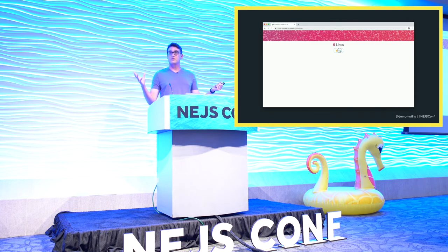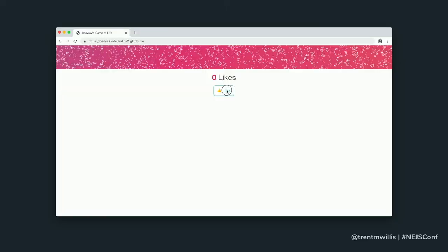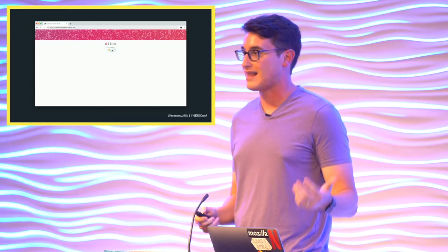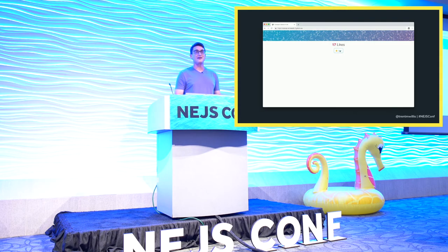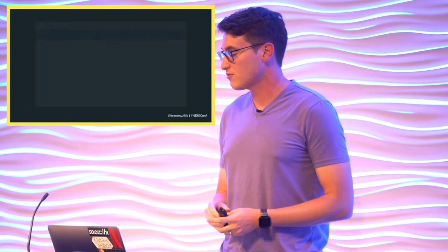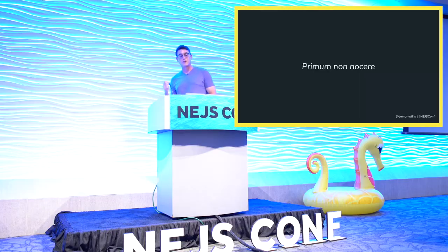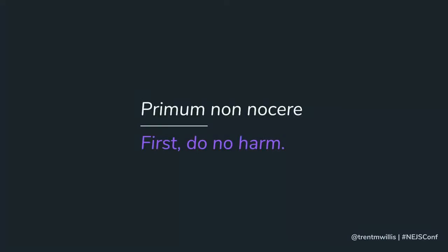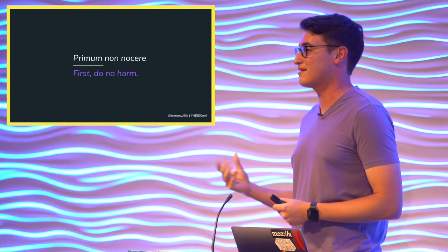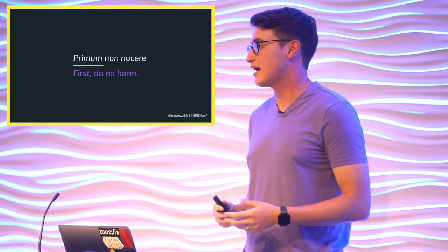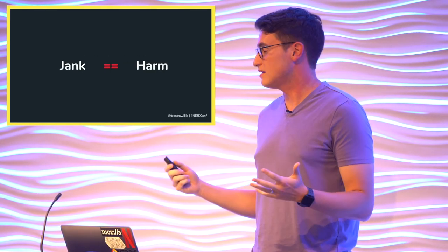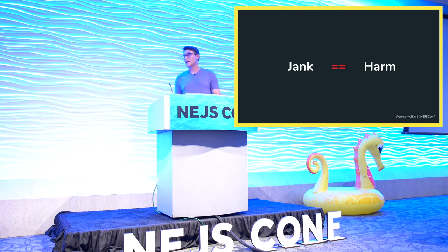Embedding art into pages sounds cool in theory, but in practice we could run into some problems. Generative art algorithms are often computationally expensive or run for a long time, and that can cause issues in the main thread — leading to laggy or janky UI interactions. Any embellishment we're adding to a page must ensure we're not detracting from the user experience. As web developers, one of our first principles should be primum non nocere — Latin for 'first, do no harm.' Jank is definitely harmful, and our users do not enjoy it.